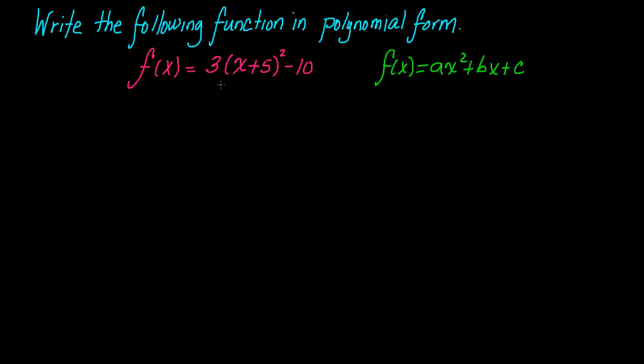And the first thing you're going to do is you're going to concentrate on this binomial here, which is being squared. There are two ways to expand this. There's the long way and the short way. We're going to do it both ways. The long way is doing FOIL.